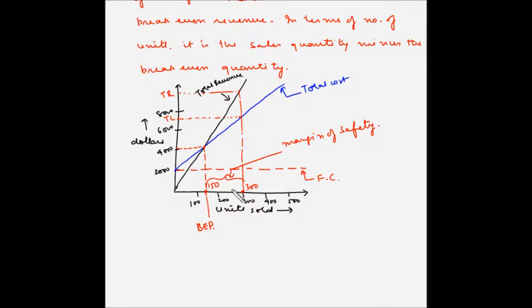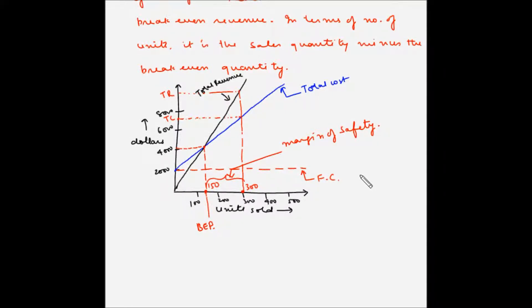Anything to the right of the break-even point indicates profit; anything to the left indicates loss. The more to the right the company operates, the greater the safety margin and the lesser the chance of falling into a loss situation. The margin of safety helps answer the what-if question: if we have budgeted revenues above the break-even point and actual revenues fall short, how far can they drop before the break-even point is hit? Such drops could result from a competitor launching a better product or a poorly executed marketing plan.